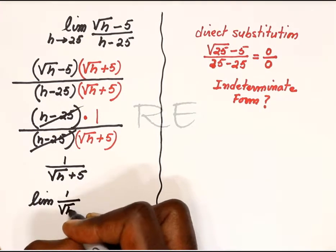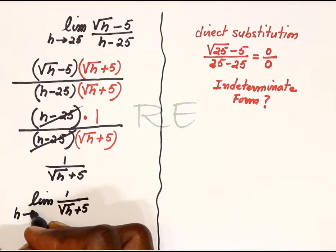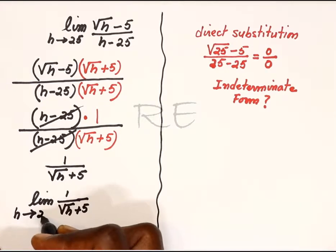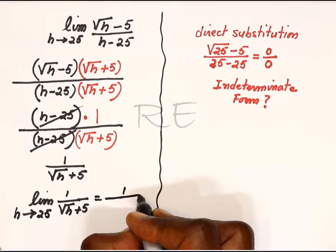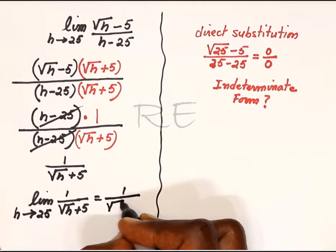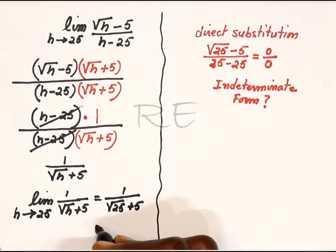Both limits should be the same. However, this limit can be obtained by direct substitution, so it's 1 over square root of 25 plus 5.